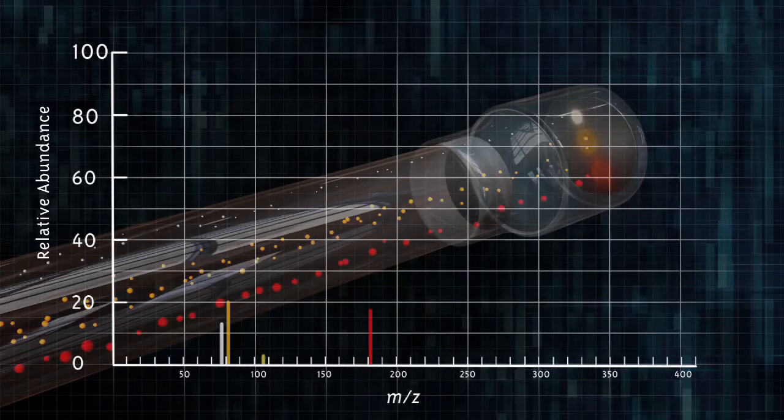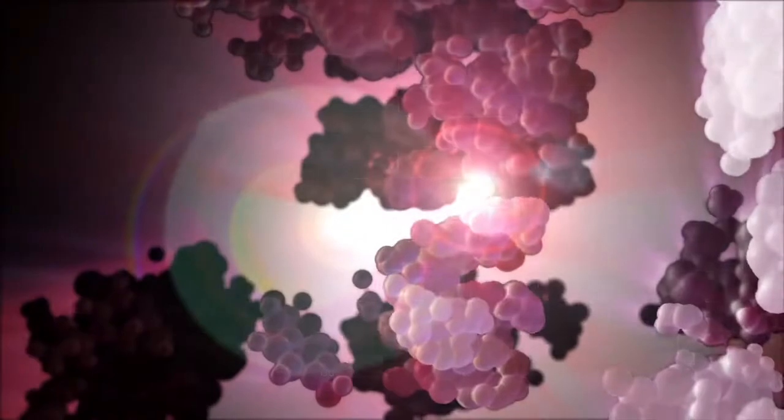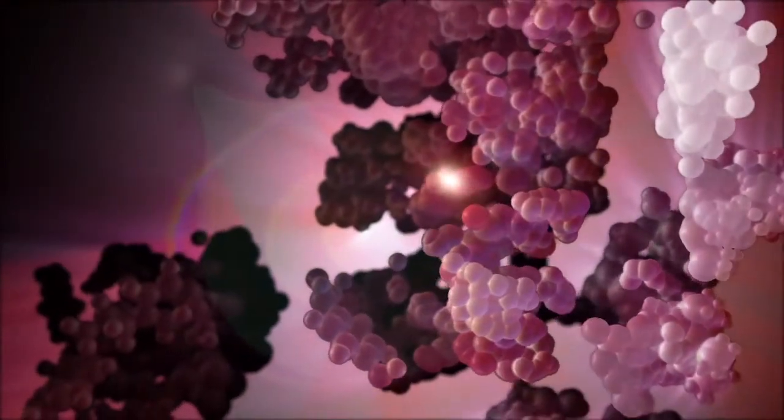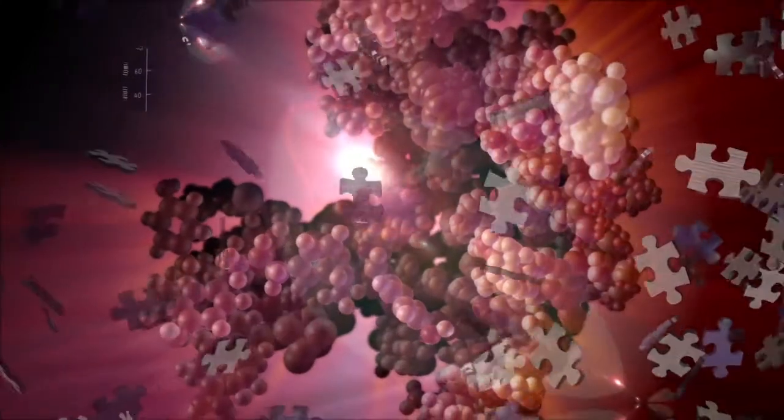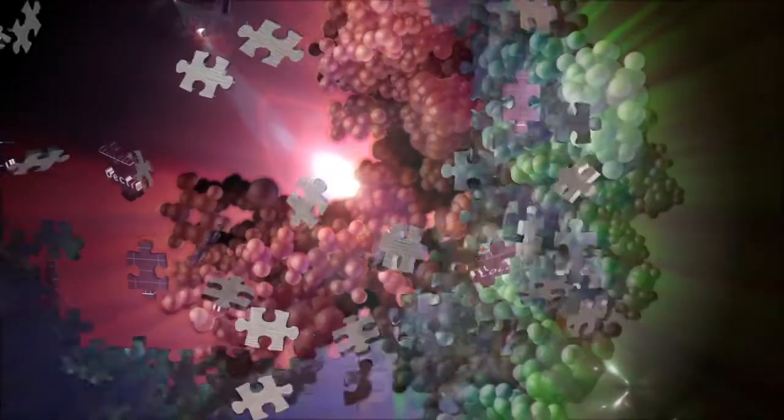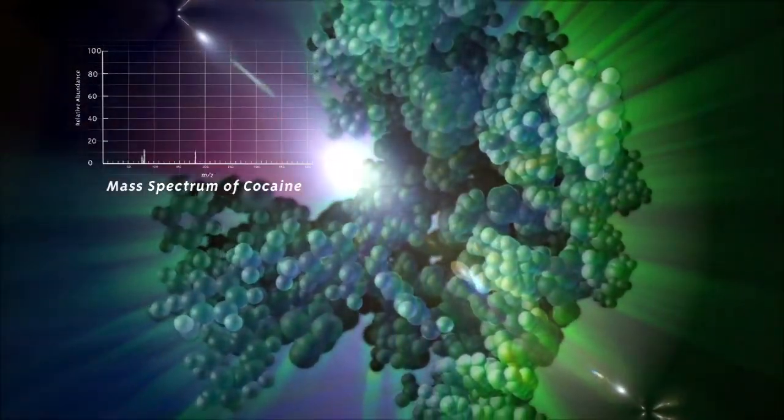To analyze the information and deduce the structure of the original molecule, a scientist must work backward, reassembling the fragments on paper. When all goes well, they fit together like puzzle pieces to reveal the composition of the original sample.